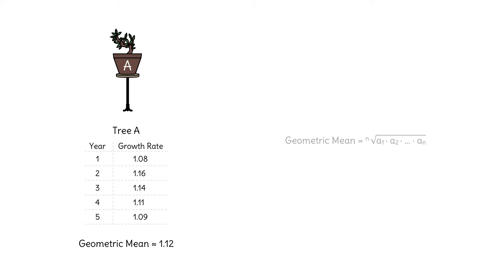In general, to find the geometric mean of a set of n values, we multiply them, then take the nth root of that product.